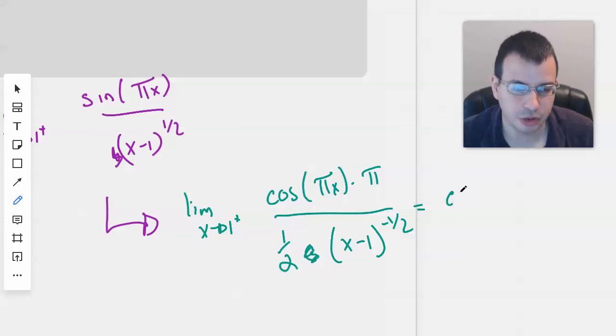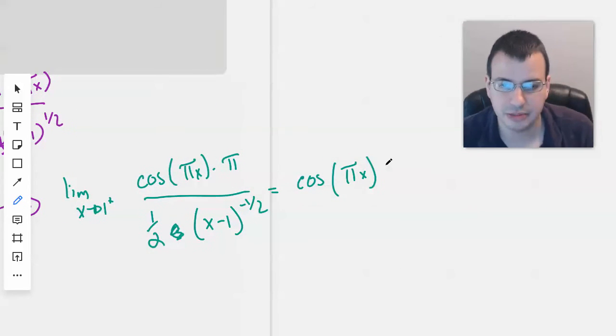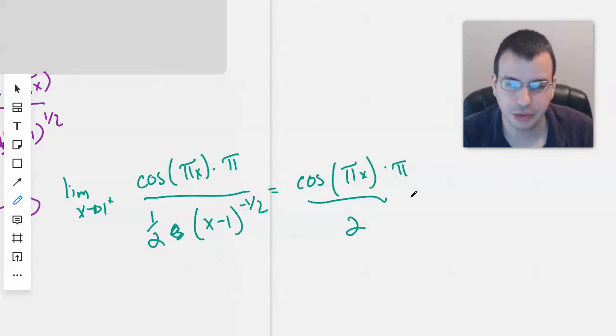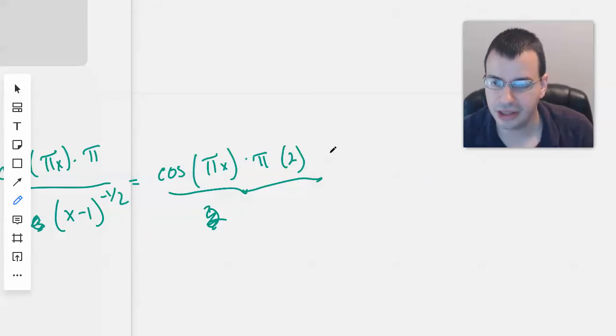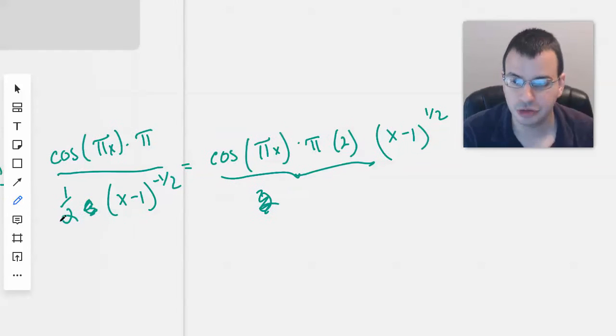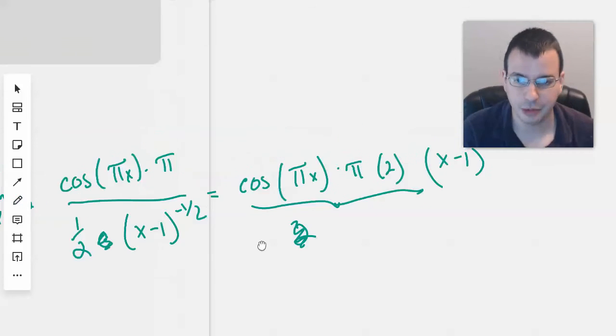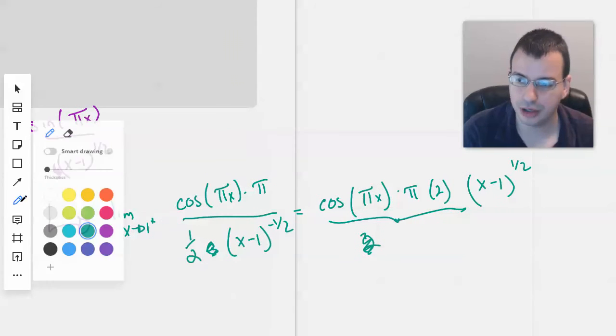Which will then equal cosine pi x times pi over 2. Because when you divide by 1 half, you get 2 on the top. And then this will be the same as x minus 1 to the square root on top. So I basically moved this whole bottom to the top. And we want to evaluate this at 1 plus.